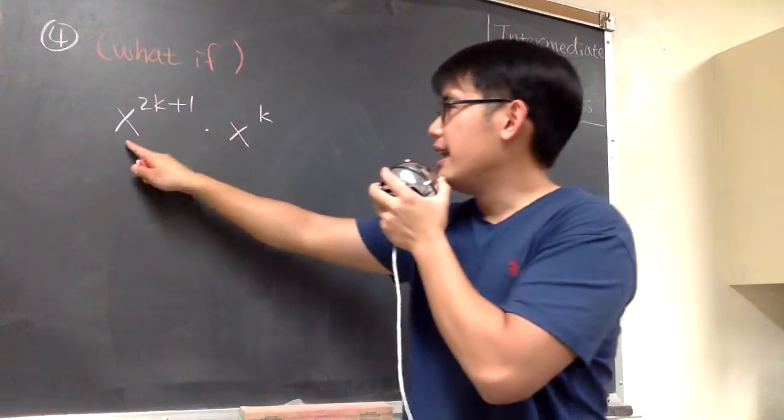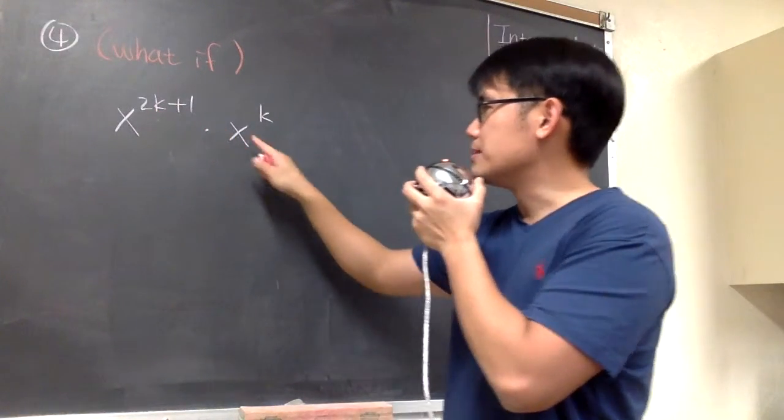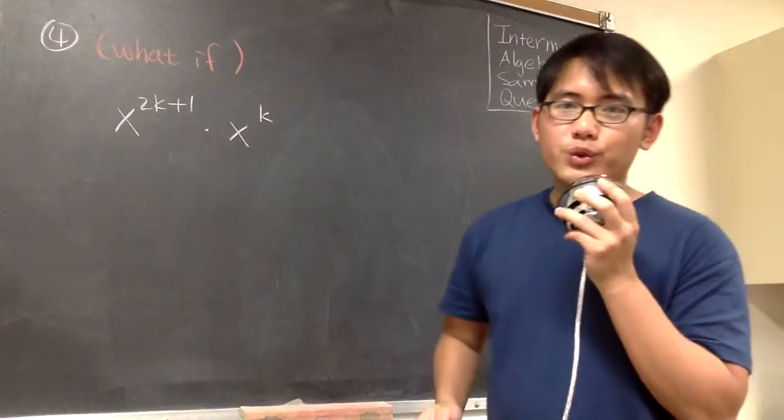Okay, what if the equation is asking us x to the 2k plus 1 power times x to the k power, what should we do in this case?